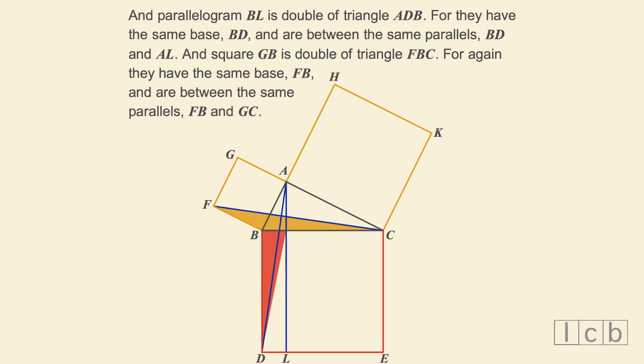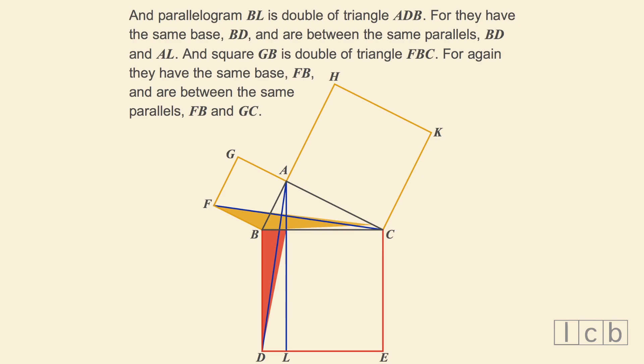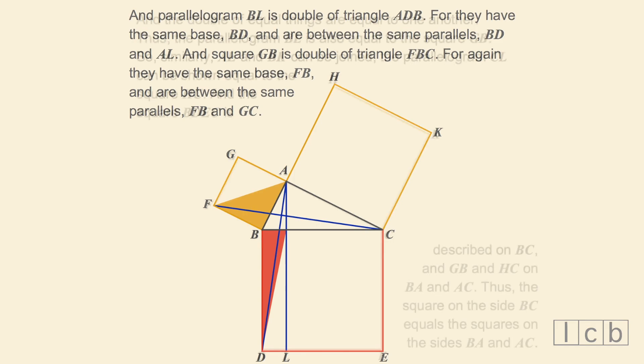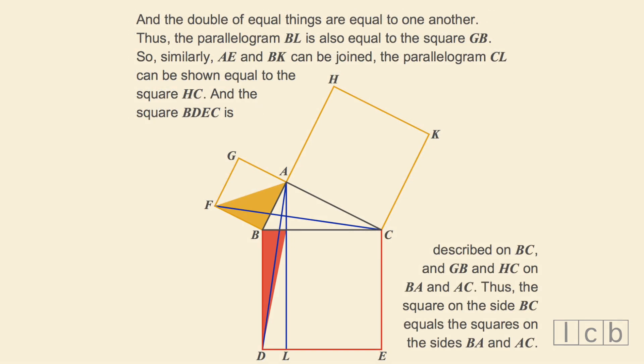And the square GB is double the triangle FBC, for again they have the same base, FB, and are between the same parallels, FB and GC. And the doubles of equal things are equal to one another. Thus, the parallelogram BL is also equal to the square GB.